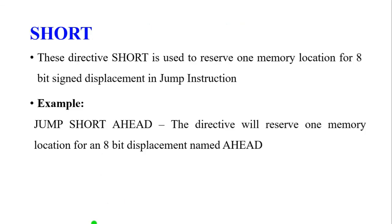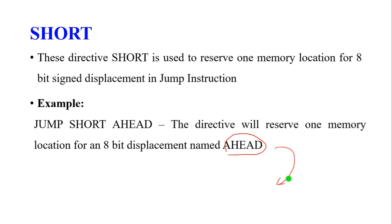The SHORT directive is used to reserve one memory location for an 8-bit signed displacement in a jump instruction. For example, 'JMP SHORT label' reserves one memory location for the 8-bit displacement to the target label where execution will jump.